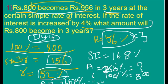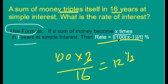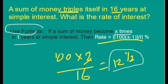See one more problem. A sum of money triples itself in 16 years at simple interest. What is the rate of interest? We use the formula: if a sum of money becomes X times in T years at simple interest, then rate of interest R = 100 × (X − 1) ÷ T. Here X = 3 and T = 16, so R = 100 × 2 ÷ 16 = 12.5%, that is 12 and a half percent as the answer.